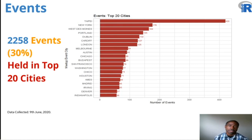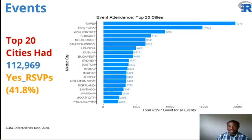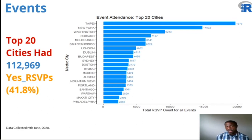30% of all R Meetup events have been organized in the top 20 cities worldwide. Number one is Taipei, Taiwan, with 420 events — more than double what we see for number two, New York City. West Des Moines, Iowa is number three, Portland, Oregon number four, and Dublin, Ireland number five. The top 20 cities had even more — 40-plus percent of yes RSVPs. Taipei, Taiwan had more than 19,700 yes RSVPs. Number two is New York City, number three Washington D.C., number four Chicago, Illinois, and number five Melbourne, Australia.